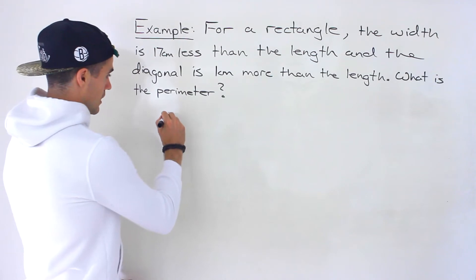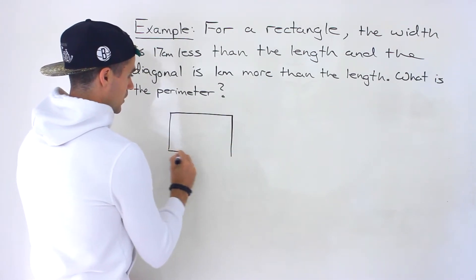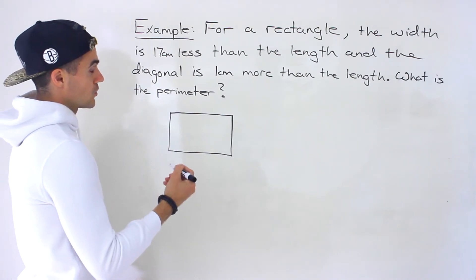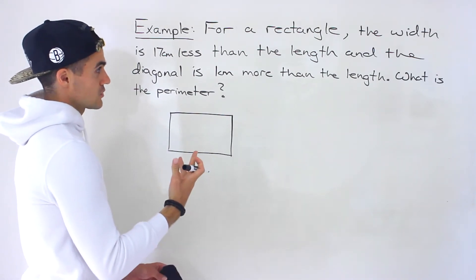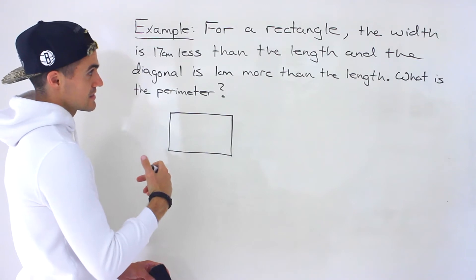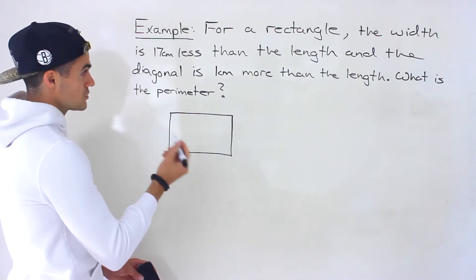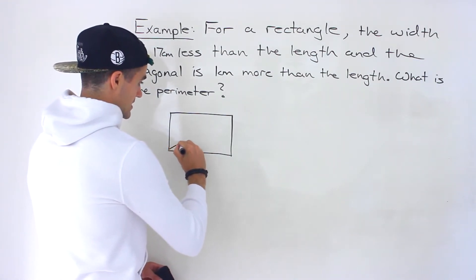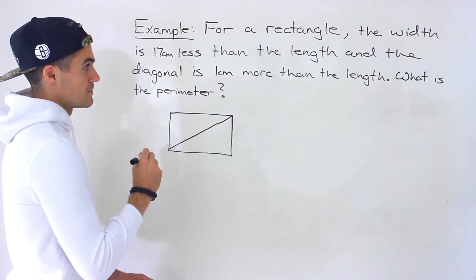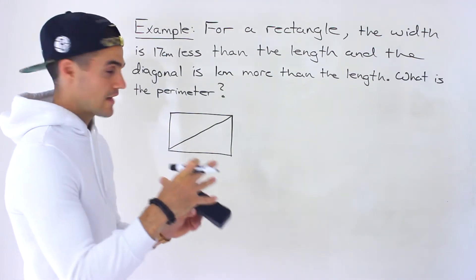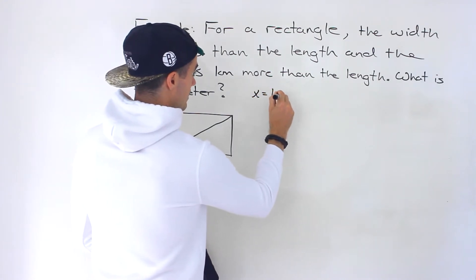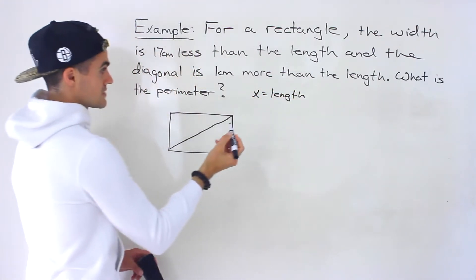To start off, I'm going to draw a diagram of what we are working with. Notice we're not told the width or the length — because then we'd be able to answer the question pretty easily. We're just told how they relate: the width is 17 centimeters less than the length, and the diagonal is one centimeter more than the length. So I'm going to introduce a variable where x is going to be the length of this rectangle.